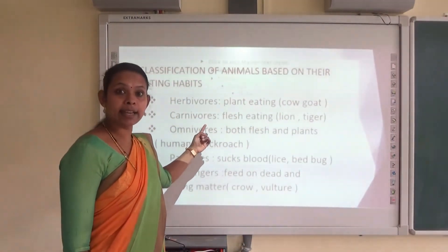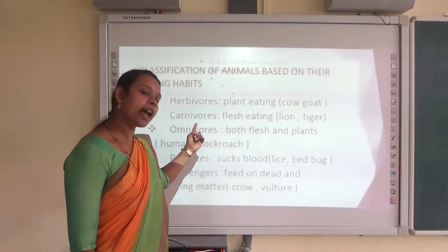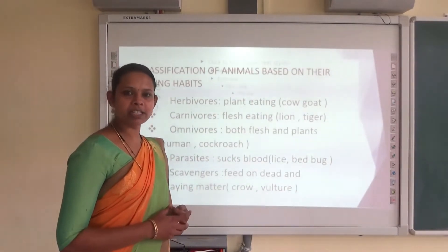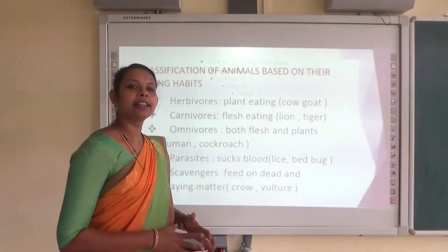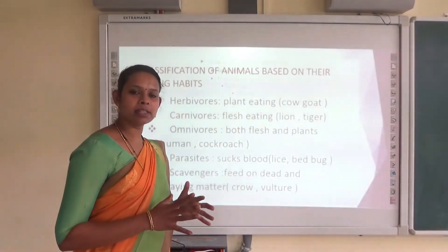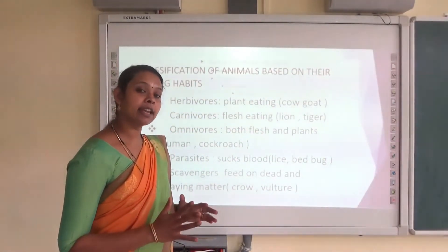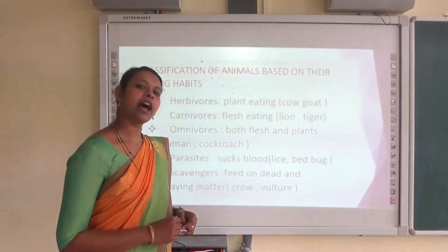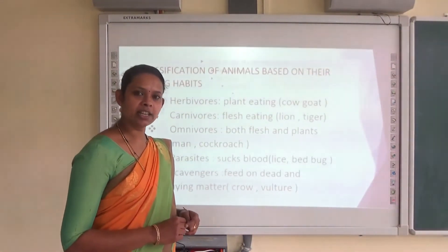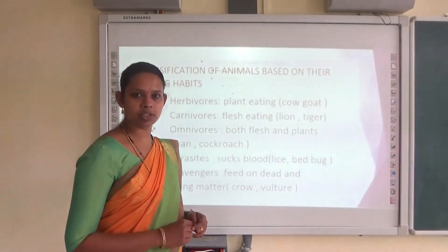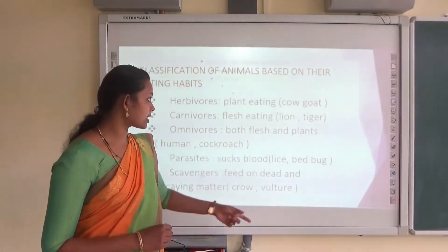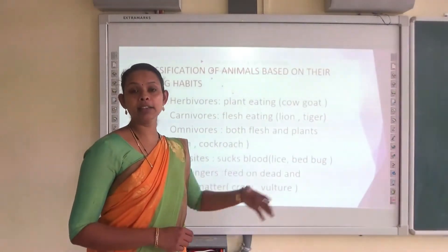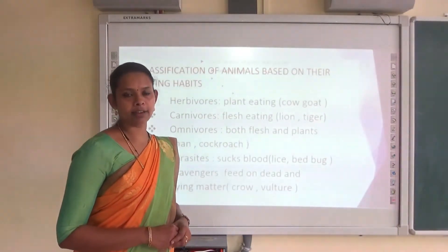The next category is carnivores. Carnivores means the animals that eat the flesh of other animals are known as carnivores. The examples are lion, tiger, etc.